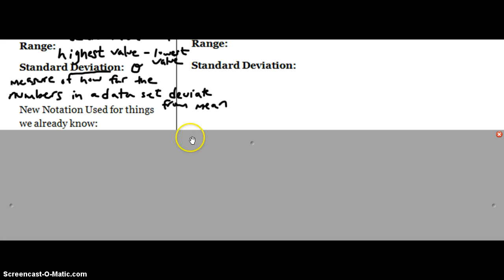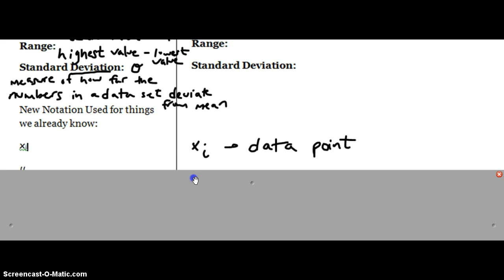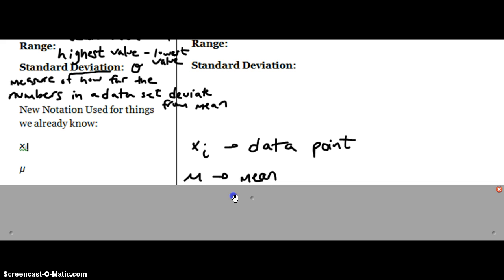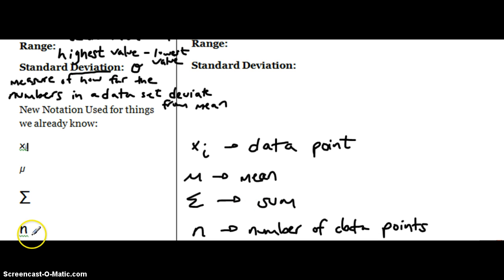The next part is talking about notation — these are things we already know, but we might not have seen this notation. The x sub i is the data point, whatever they give you. We'll use this to find different things like z-score and standard deviation. The mu, the Greek letter mu, is the mean of a population. Capital sigma — you saw this with sequences and series — that is a sum. And lastly, n in statistics is the total number of data points.